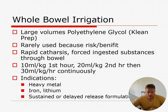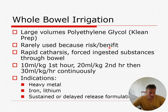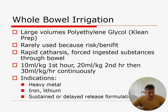Whole bowel irrigation is very rarely used because it's hard to give and not well tolerated, but can be helpful for things like iron. You're basically giving Klean-Prep through an NG tube — they can't drink the amount needed. Dosing: 10 ml/kg in the first hour, then 20 ml/kg in the second hour, then continuously at 30 ml/kg per hour. If they're under five, they'll usually need IV fluids running at the same time due to losses.